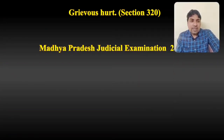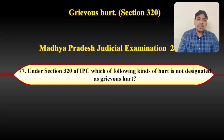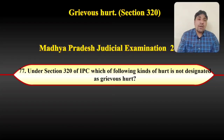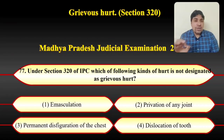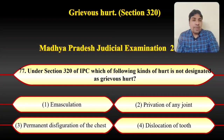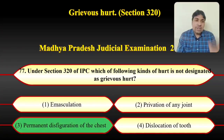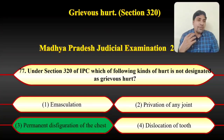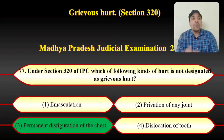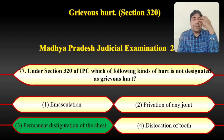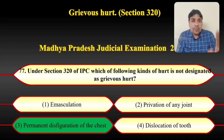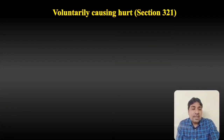In Maharashtra and Madhya Pradesh Judicial Examination 2017, the question was: 'Under section 320 of IPC, which of the following kinds of hurt is NOT designated as grievous hurt?' — (a) emasculation, (b) privation of any joint, (c) permanent disfiguration of the chest, (d) dislocation of tooth. Emasculation, privation of any joint, and dislocation of tooth are all grievous hurt, but permanent disfiguration of the chest is NOT — only permanent disfiguration of the face or head qualifies. So option 3 is the correct answer.